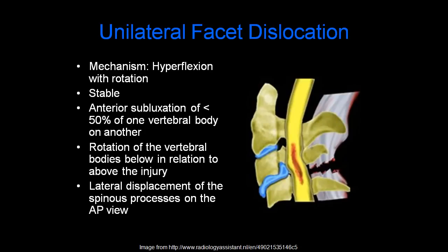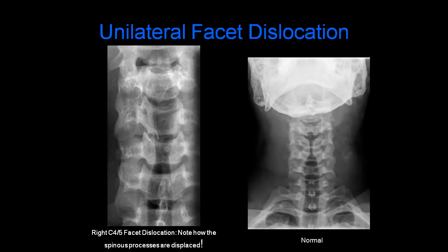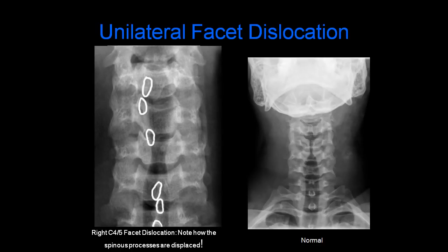You can also get a unilateral facet dislocation, and the mechanism is hyperflexion with rotation. This is considered a stable injury. There is anterior subluxation of less than 50% of one vertebral body on another. You can see rotation of the vertebral bodies below in relation to above the injury, as well as lateral displacement of the spinous processes on the AP view. Here is an example of unilateral C4-5 facet dislocation: the C4 vertebral body is anteriorly subluxed in relation to C5, with facet abnormality but without the bow tie sign. On the AP view, the spinous processes are displaced, indicating right C4-5 facet dislocation.